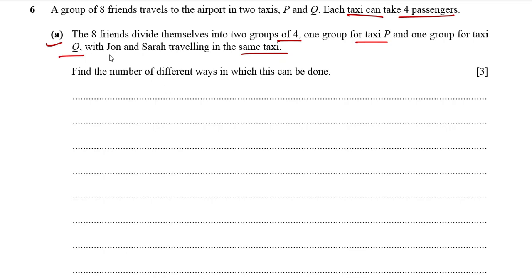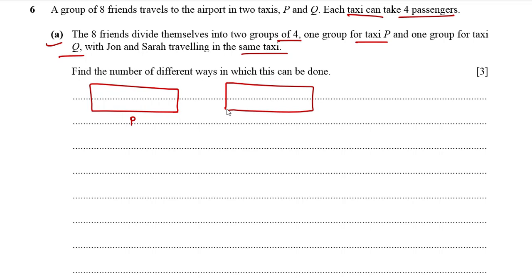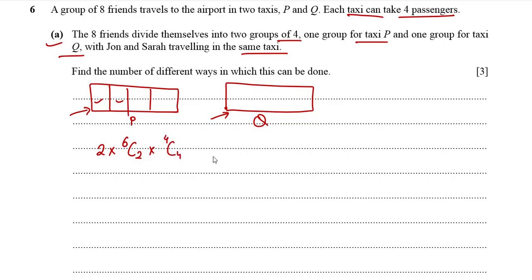The condition is John and Sarah traveling in the same taxi. There are two taxis with four places each. John and Sarah can travel together in P or in Q, so it can be done in two ways. For instance, if both John and Sarah are in taxi P, then two places are filled, and for the remaining two places we can choose two persons out of six. The remaining four would go to taxi Q and can be chosen in 4C4 ways.